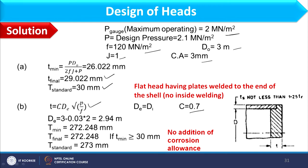DE is found as the outer diameter of 3 m minus 2 × 30 mm (the standard shell thickness), giving DE = 2.94 m. With C = 0.7, the minimum flat head thickness is computed as 272.248 mm.